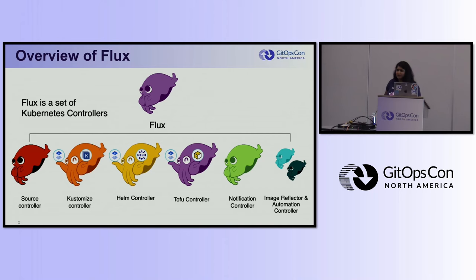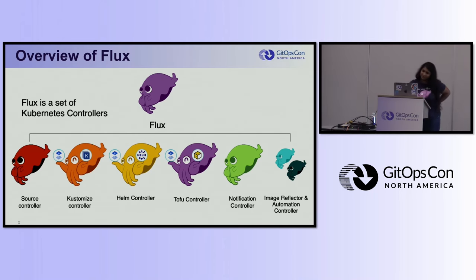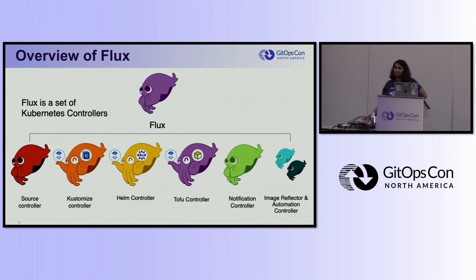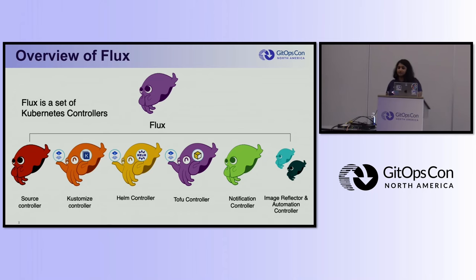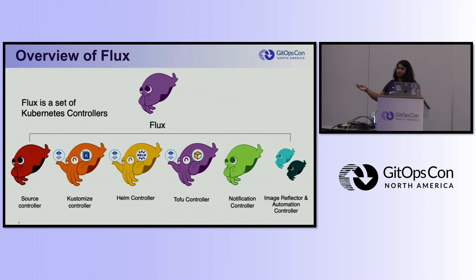The TOFU controller — not found on the Flux 2 project page — was recently renamed from the Terraform controller. It allows you to manage OpenTofu or Terraform resources, which is why Flux is not limited to Kubernetes: you can deploy anything anywhere. The notification controller handles inbound and outbound traffic. It can send notifications to Slack if something's down or a release just happened.